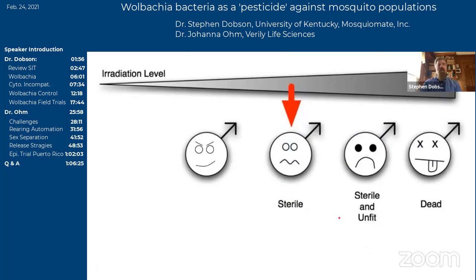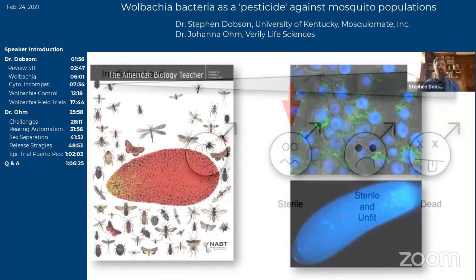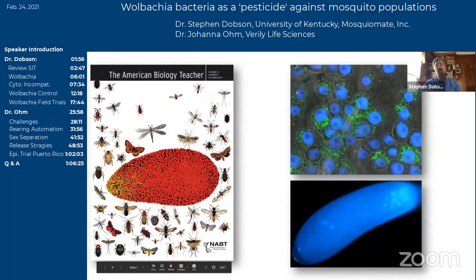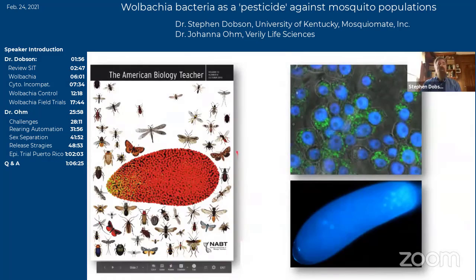What you heard about last week from Dr. Boyer is some exciting new developments where they're testing new methods — for example, switching from irradiating pupae to now trying irradiation of adult males, and also things like hypoxia, irradiating under very low oxygen levels. What we've done, and what you're going to hear Dr. Ohm and I talk about, is instead of improving upon radiation technologies, we've actually moved completely away from irradiation. We're not using genetic modification. Here we're focusing on Wolbachia.